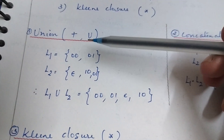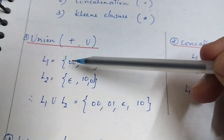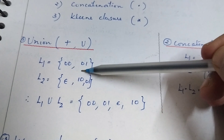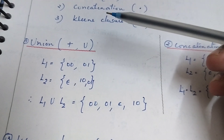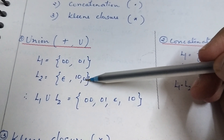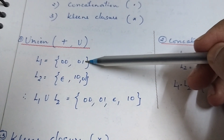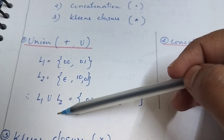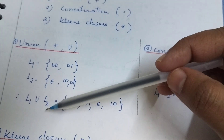Let's see a small example for union, concatenation, and Kleene star closure. Suppose L1 and L2 are two languages — L1 has some strings and L2 has some strings. L1 union L2 means all the strings belonging to either L1 or L2, similar to set union in mathematics. So the union contains strings 00, 01, epsilon, and 10 — since 01 from L2 is already in L1, there is no need to repeat it. L1 union L2 is itself a regular expression if L1 and L2 are regular expressions.